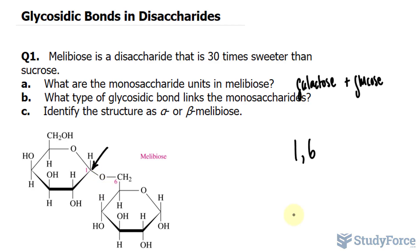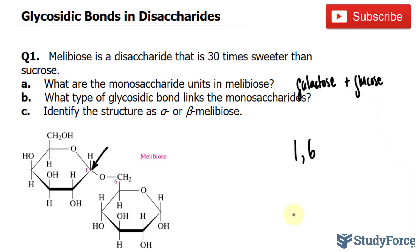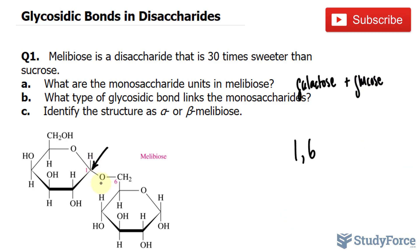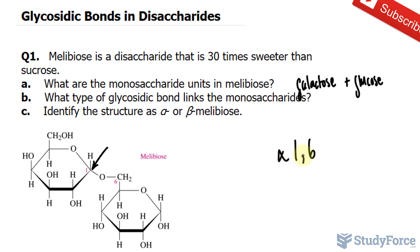So remember: when the OH is down, it's alpha, and when it's up, it's beta. Because it's pointing downwards, we say that it's an alpha 1,6-glycosidic bond.